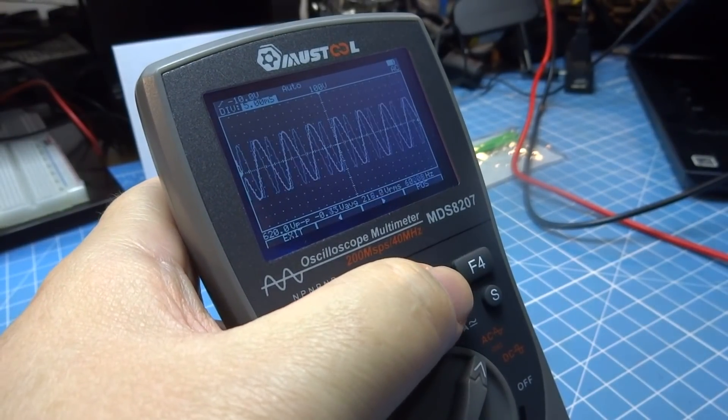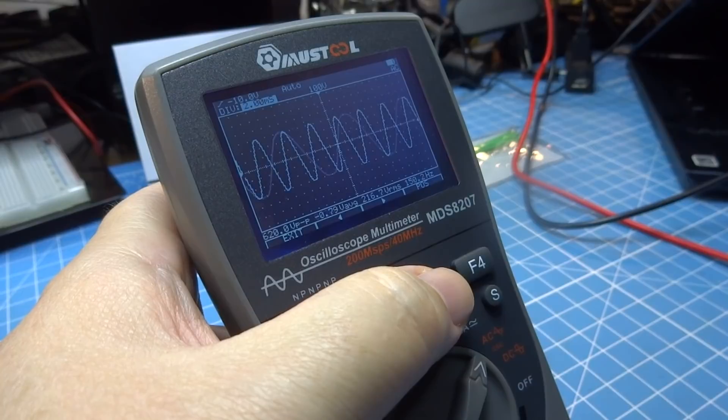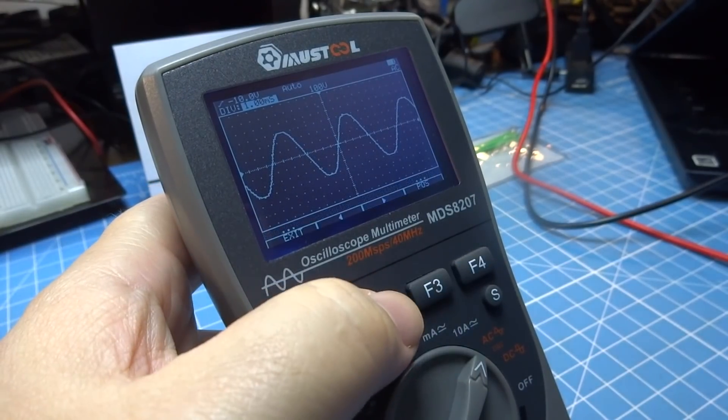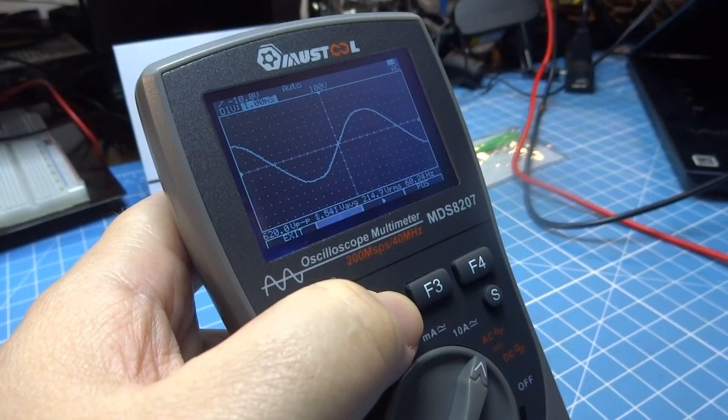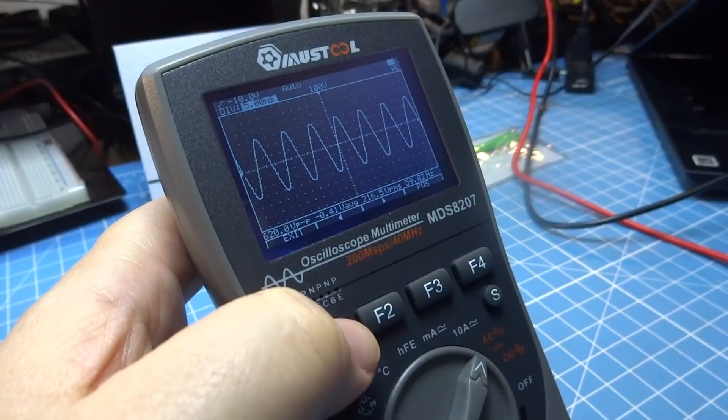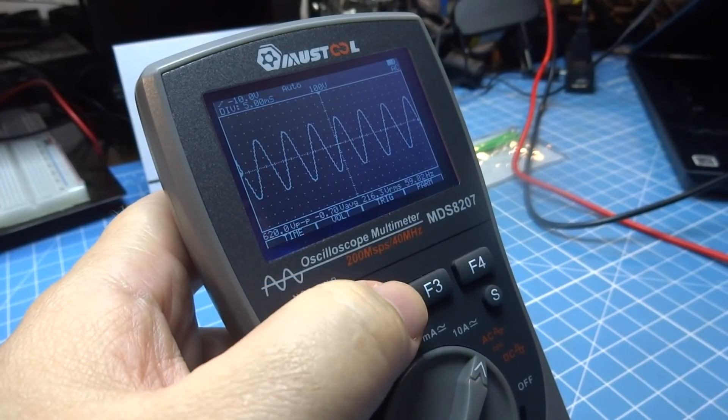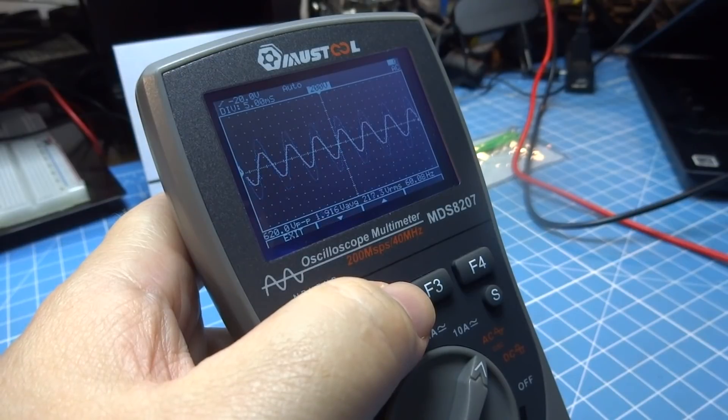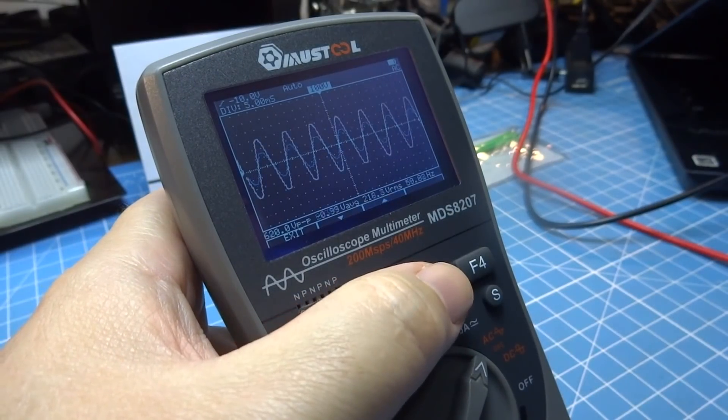Mas o 8207 permite que você mesmo ajuste a visualização. Basta usar os botões de função para selecionar a opção desejada e regular conforme você queira visualizar. A facilidade de uso deste equipamento é interessante para uso fora da sua base de trabalho, pois não é preciso regular ponteiras X1, X10 ou X100. E este suporta até 700 volts sem precisar regular. E isso facilita muito a agilidade do trabalho.